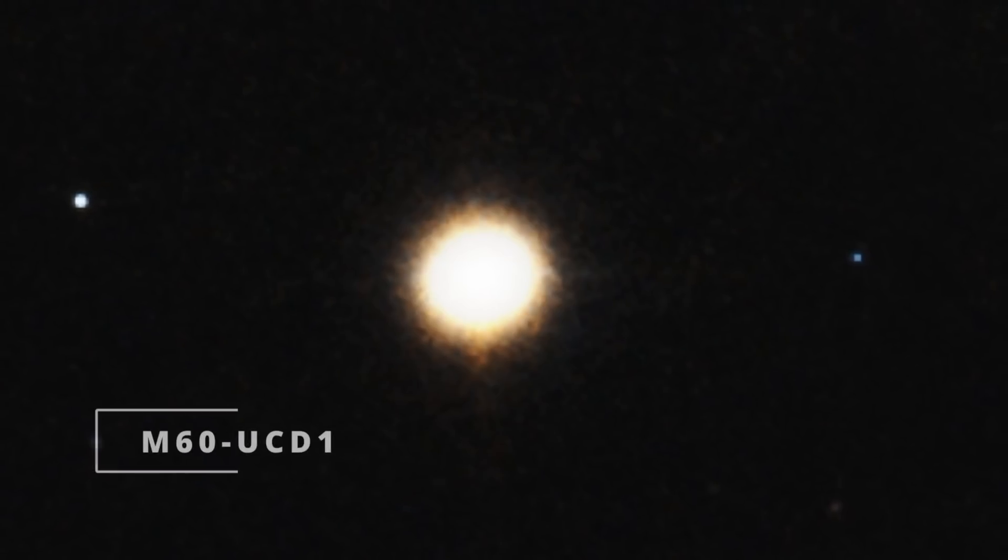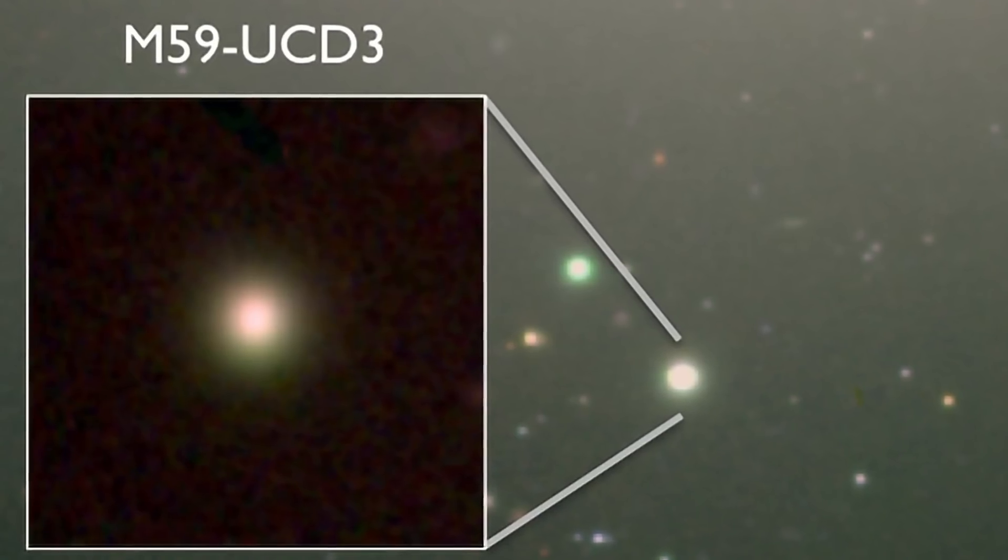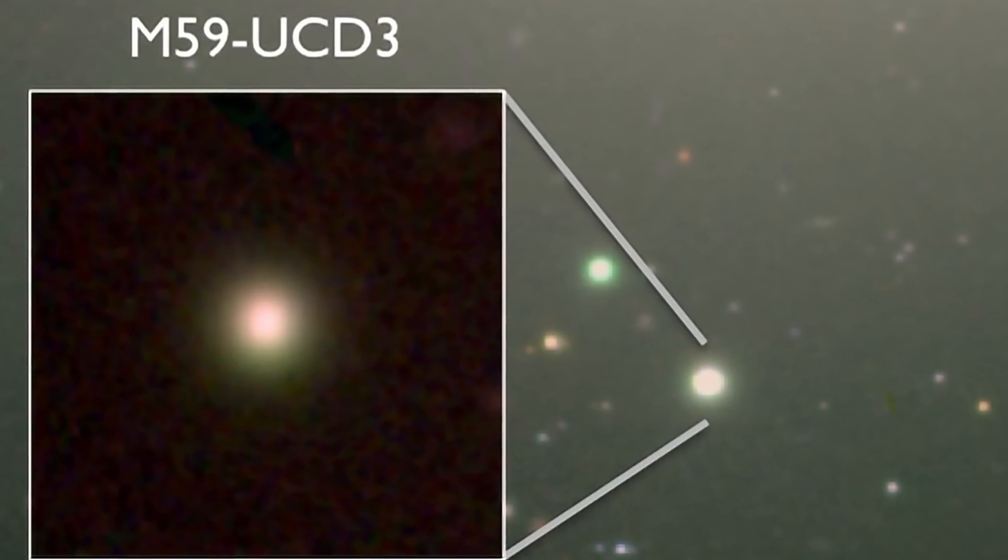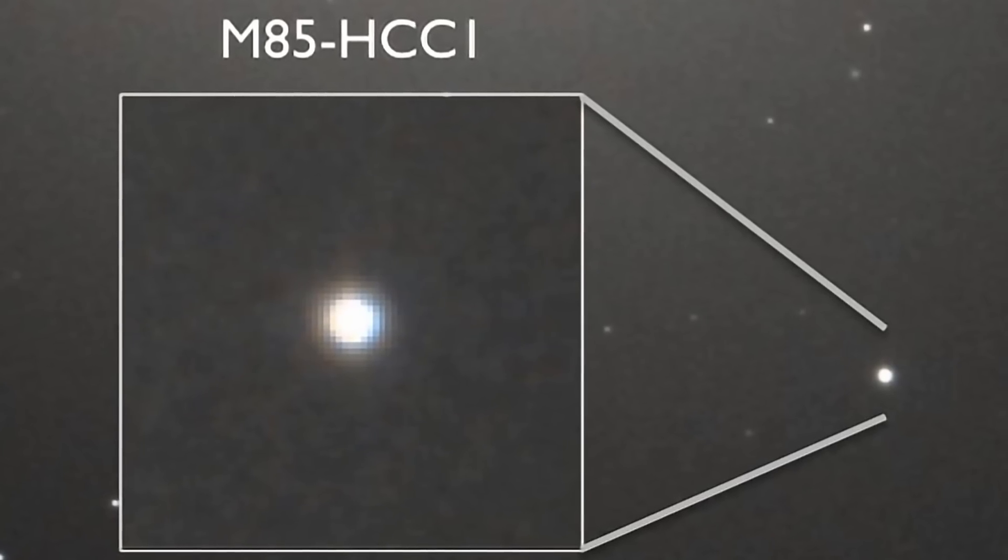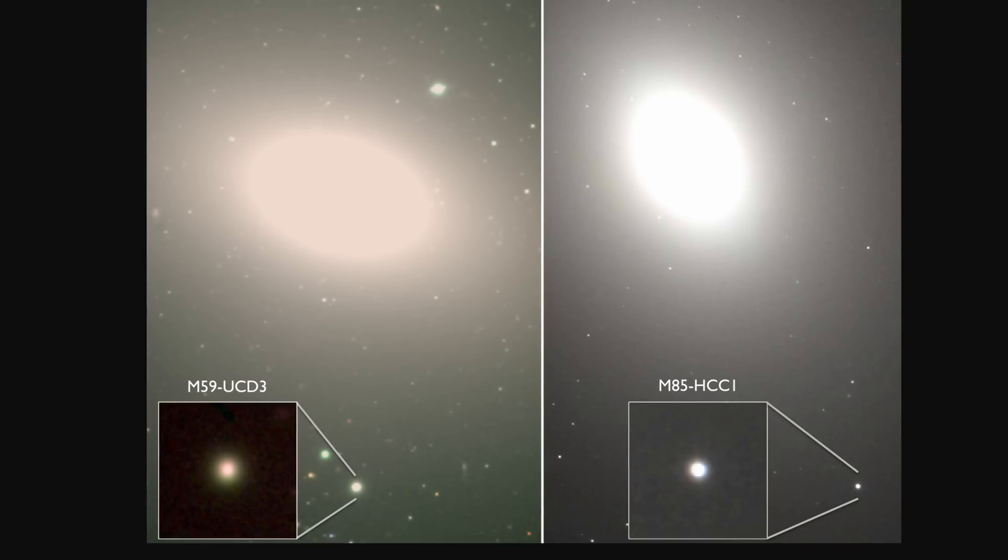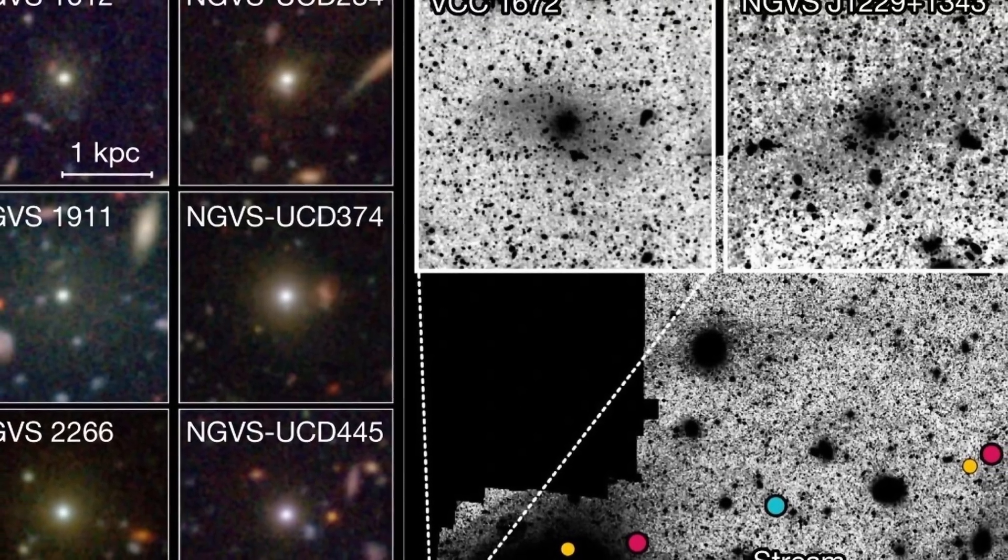This one is known as M60 UCD-1 and it's approximately 54 million light years away from planet Earth. Here are two more galaxies discovered back in 2015, both resembling very similar unusual spots, extremely bright spots that don't really look like any other galaxy. And that's because these objects are very unique.